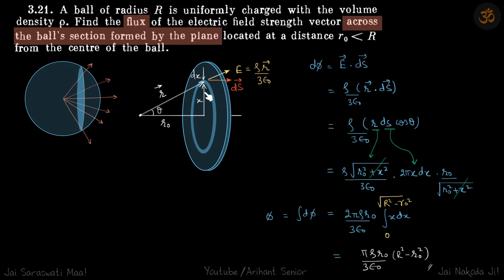Now r is square root of r₀ square plus x square. And ds is 2πx dx and cos theta is r₀ upon square root of r₀ square plus x square.